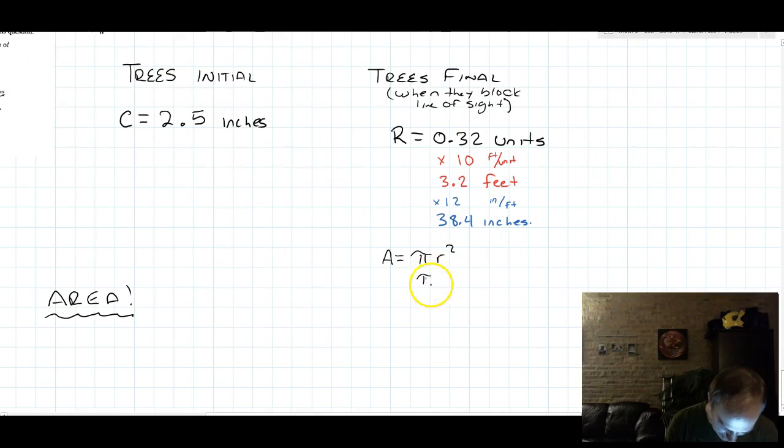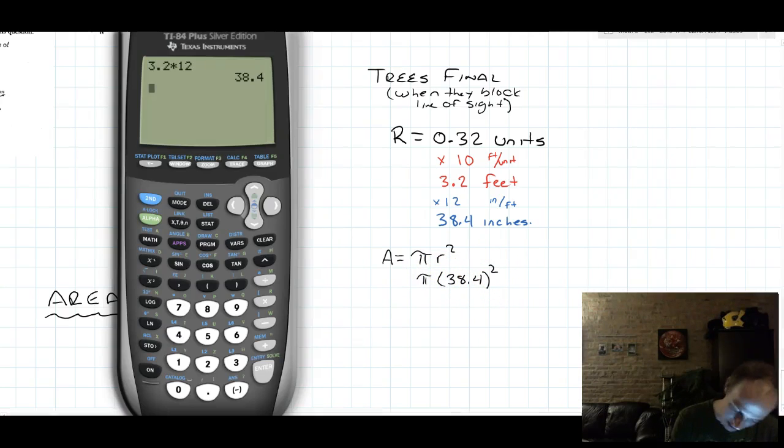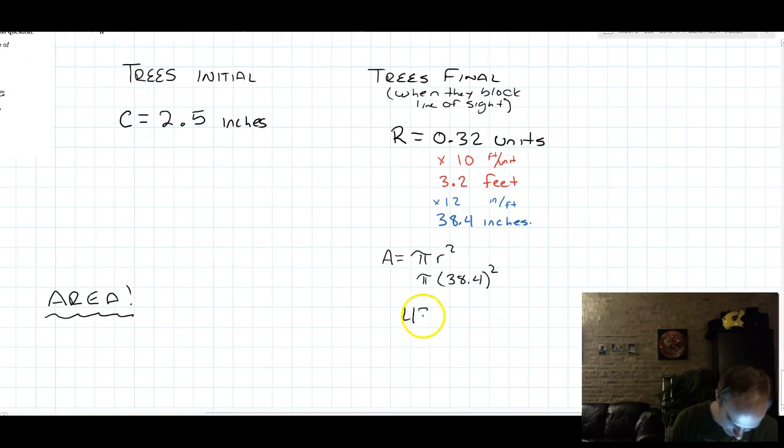We know that area is pi r squared, which is pi times 38.4 squared. I've got a calculator. You've got a calculator. Let's just do it. Pi times 38.4 squared. Big number. 4632.46 inches squared. I can't even write it down, it's so big.